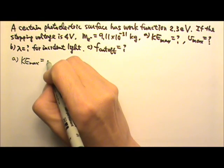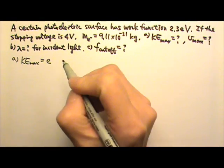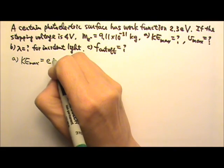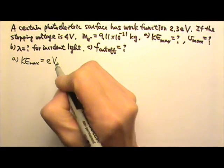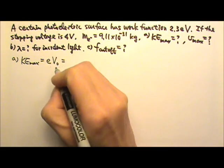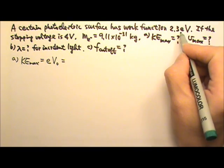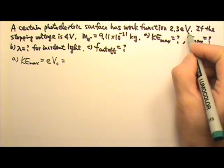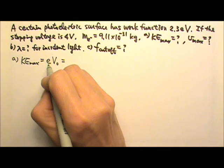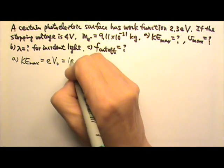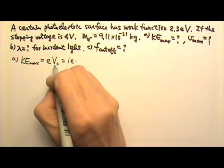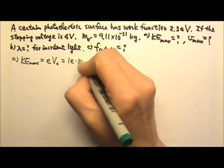Therefore, this will be Q, which is the elementary charge e, times V, the stopping voltage. This equals eV. Because we're using electron volts, the charge is 1e and the voltage is 4V, the stopping voltage.